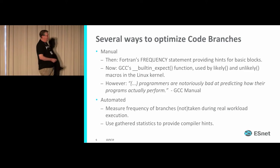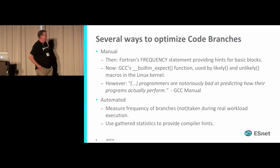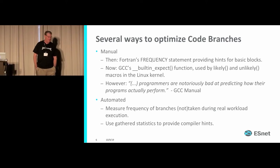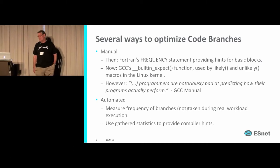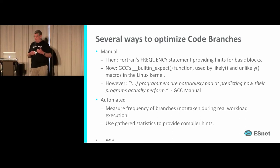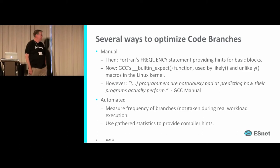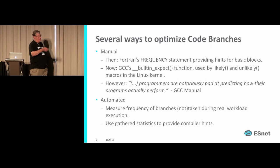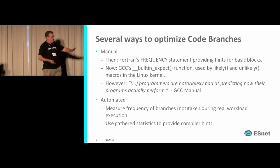The GCC manual notes that programmers are notoriously bad at predicting how their programs actually perform. So we don't want to rely on our own instincts — we'd prefer the computer figure that out. The easiest way is to actually measure which direction branches went, then take those statistics and use them to recompile the program, so the compiler can optimize the code path using those gathered statistics.